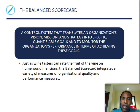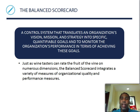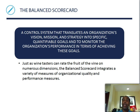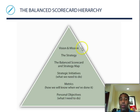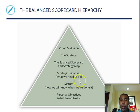The balanced scorecard is a control system that translates an organization's vision, mission, and strategy into specific, quantifiable goals and monitors the organization's performance in terms of achieving those goals. Just as wine tasters rate wine on numerous dimensions, the balanced scorecard integrates a variety of organizational quality and performance measures. The hierarchy starts with vision and mission at the top, followed by strategy, strategic initiatives, metrics, and personal objectives.